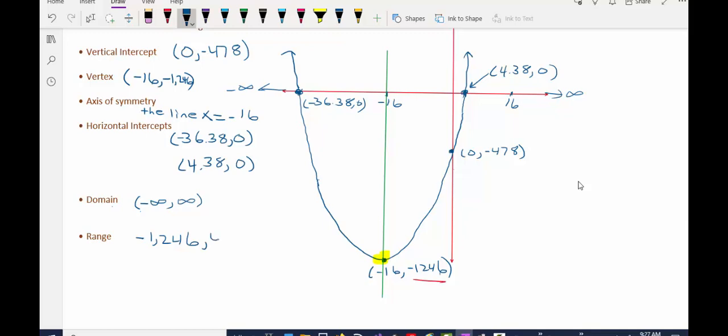While there is no such thing, so we say that the y value goes to infinity. We don't include infinity, so we put a parenthesis here, but I'm going to put a bracket on the number negative 1,246 because that's clearly a y value that can come out of this function because we actually got it when we plugged in negative 16 into the function earlier in the video using the calculator.